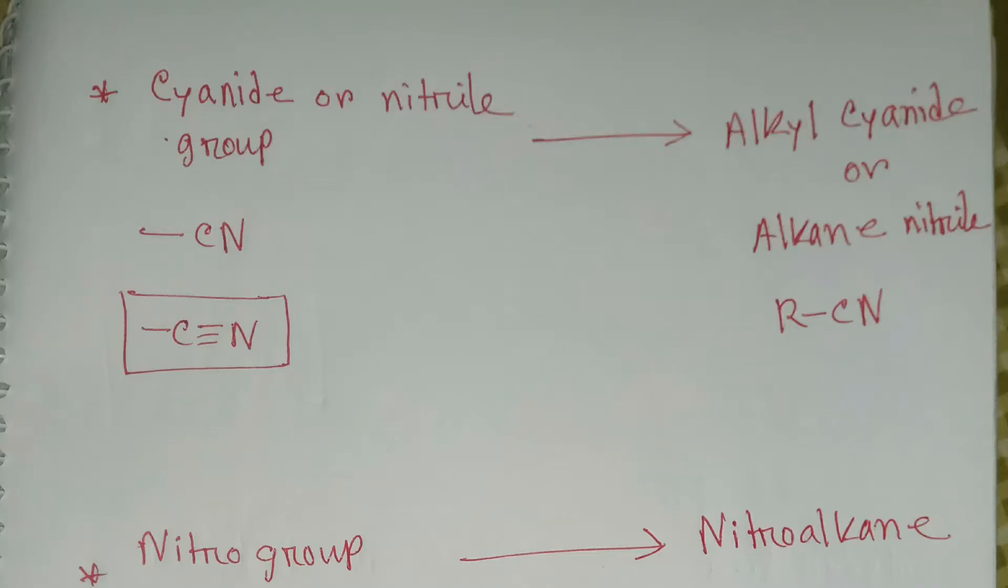Hey what's up guys, today we are going to learn about some functional groups. You know that we have alkyl cyanide or alkyl nitride. The general formula of alkyl nitride or alkyl cyanide is R bond CN.